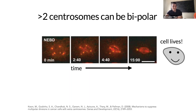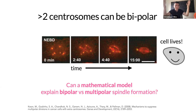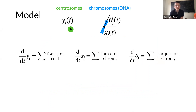The cell doesn't detect this as an error and the cell lives. This is a mechanism by which cancer cells fake being healthy — they circumvent the test for whether mitosis happened properly and form a bipolar spindle in spite of starting with many centrosomes. This is ripe for mathematical modeling: if you start with a bunch of organizing centers, why can you get different shapes? It's a qualitative question about shapes that you end up with.